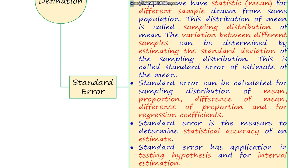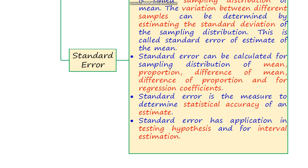Standard error is calculated from the distribution of mean, proportion, difference of mean, difference of proportion, and for regression coefficients. With the help of standard error we determine the statistical accuracy of an estimate, or the reliability of the estimate. Standard error has applications in the field of hypothesis testing and interval estimation.